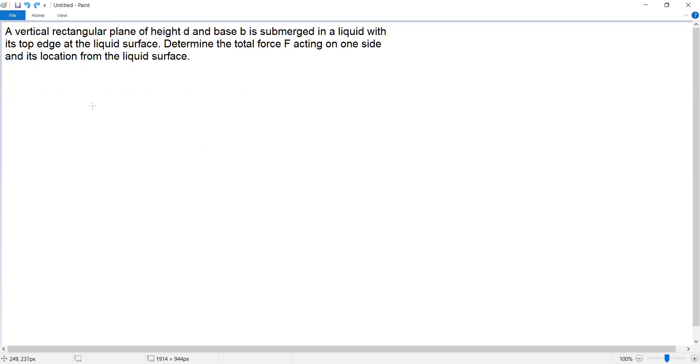So we have a rectangular plane submerged in liquid. Let's say this is the liquid surface. Then the rectangular plane is right at the top edge at the liquid surface. So the base is B and the total height is D.